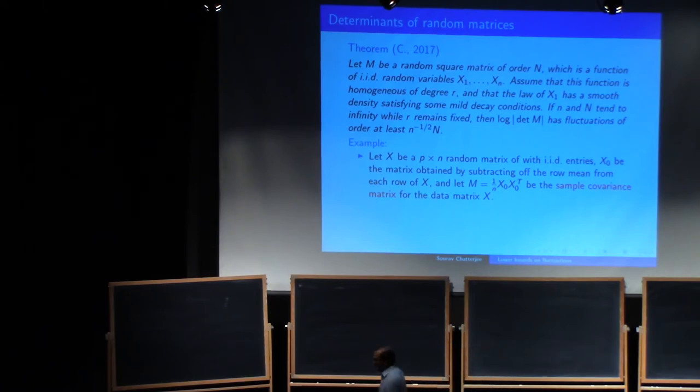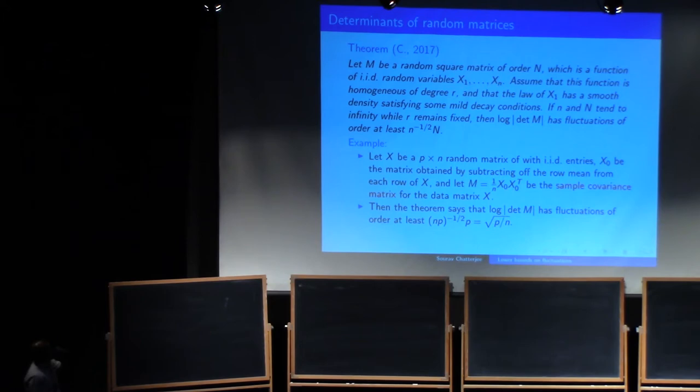So here's just one example. I'll not talk about the history and so on for the interest of time, and I just, this is the last slide. So just one example. Suppose x is a p by n random matrix with i.i.d. entries, and x0 is the matrix obtained by subtracting the row mean from each row, and m is 1 over n x0 x0 transpose the sample covariance matrix for the data matrix x. So you have a data matrix x and you take the sample covariance matrix in statistical terminology. And then the theorem says that under some conditions on the entries, log of the determinant has fluctuations of order, so you see the number of random, independent random variables here is NP. That's all the entries of x. So it's 1 over root NP times the order of the matrix, which is p. So that gives you root p over n.